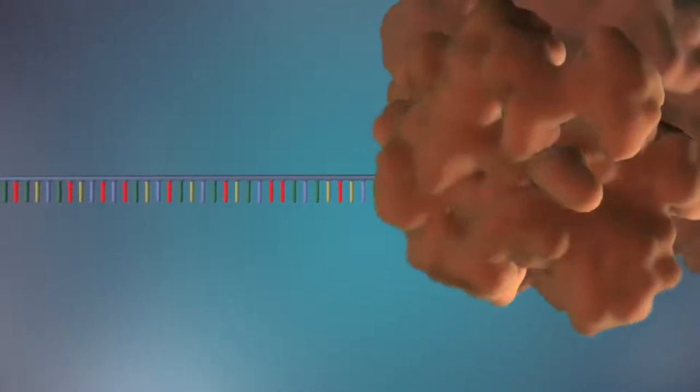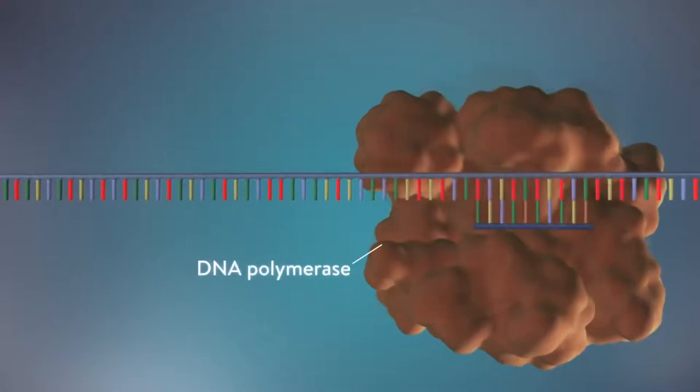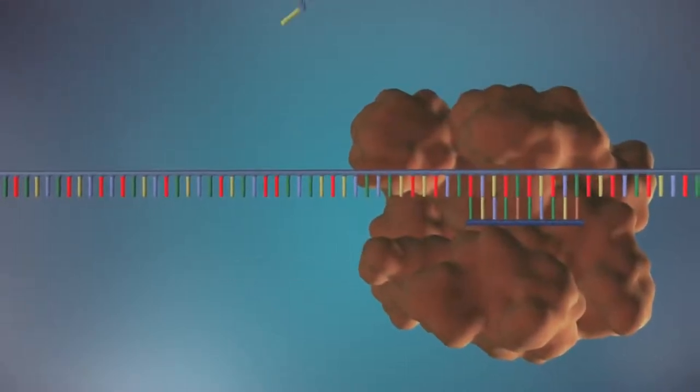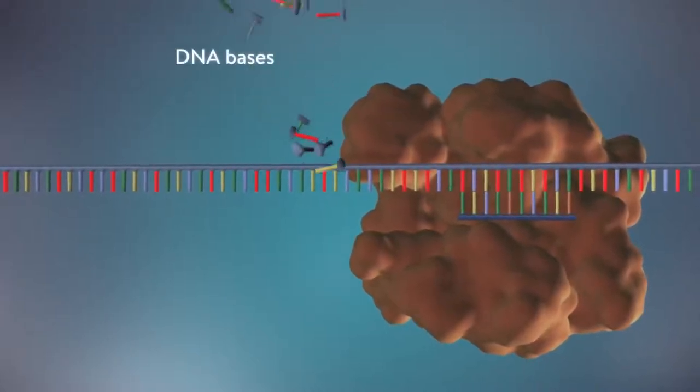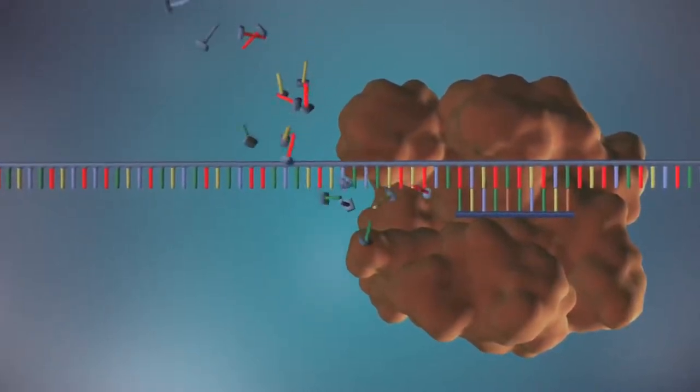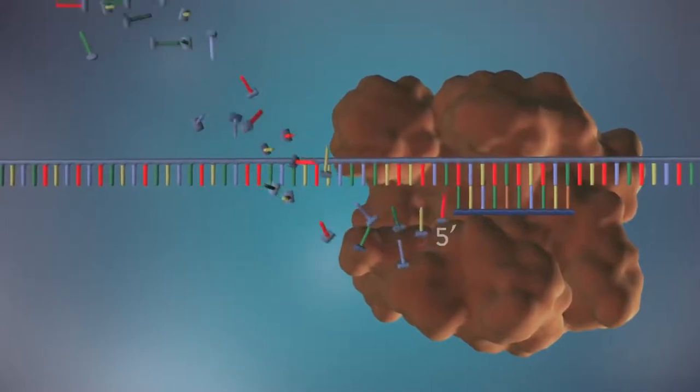An enzyme called DNA polymerase binds to the primer and makes the new strand of DNA. DNA polymerase can only add DNA bases in one direction, from the 5' end to the 3' end.